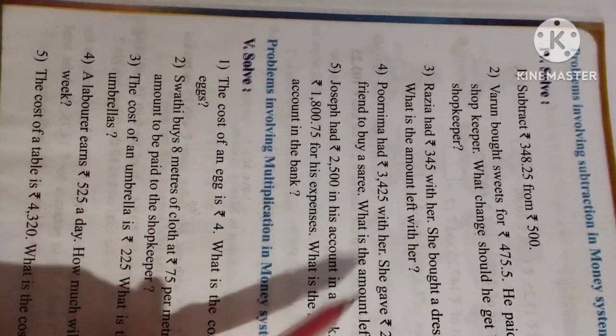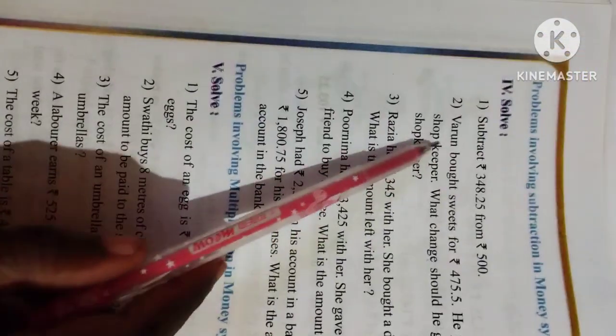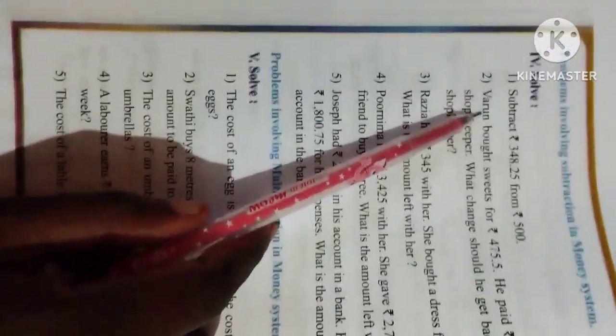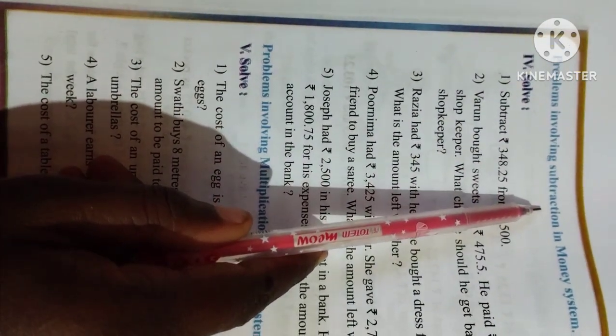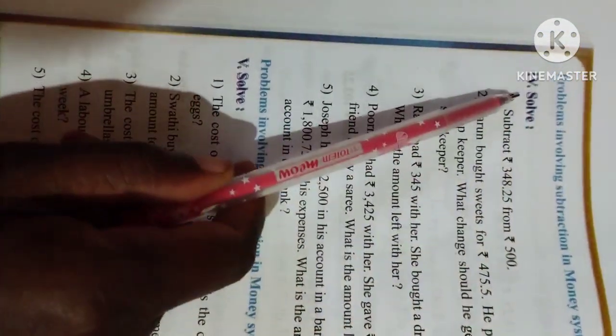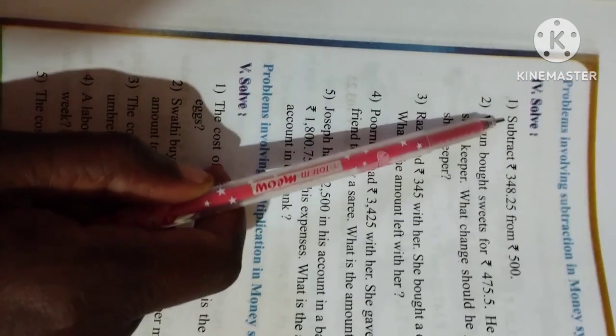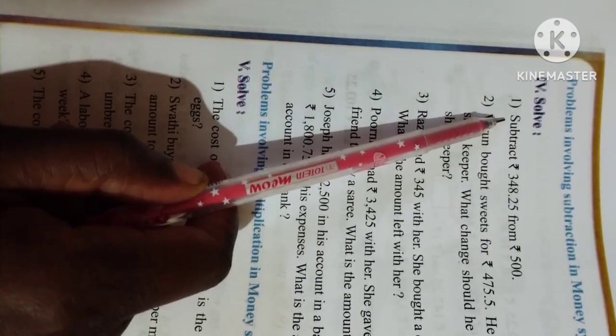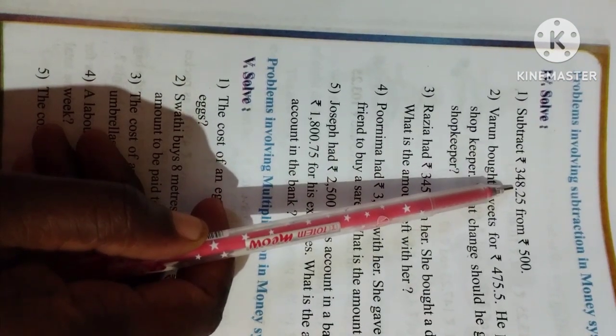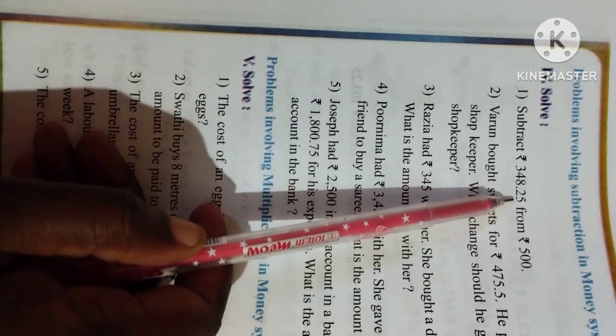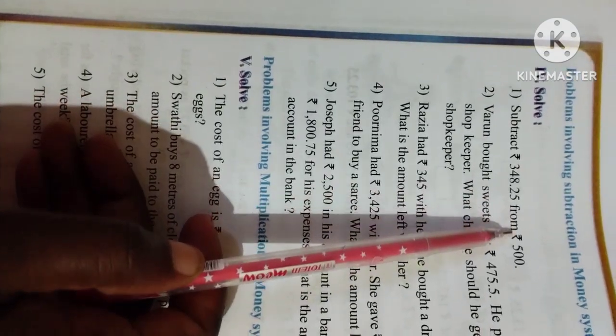This is question 4. Already we learnt 1 to 3. Problems involving subtraction in money system. This is question 4. What they are given in question: subtract Rs. 348.25 from Rs. 500.